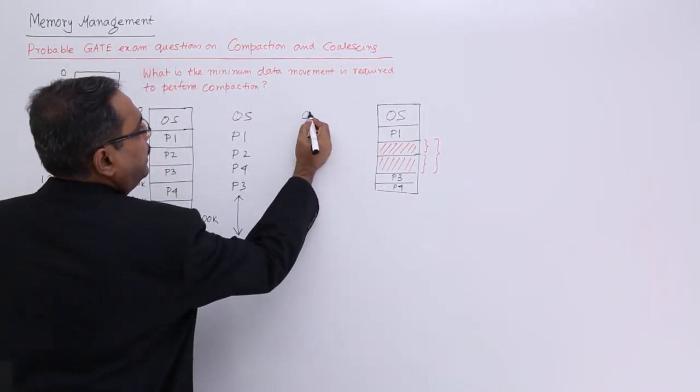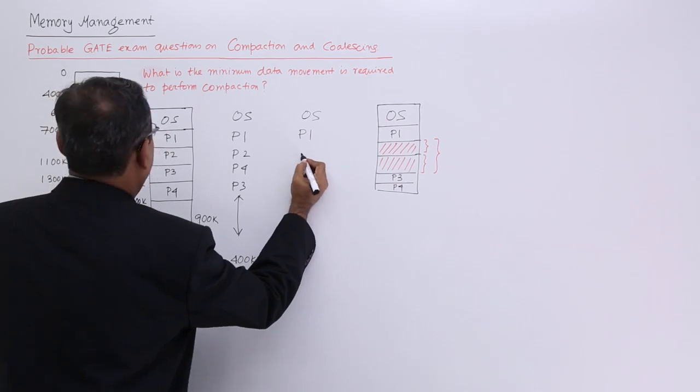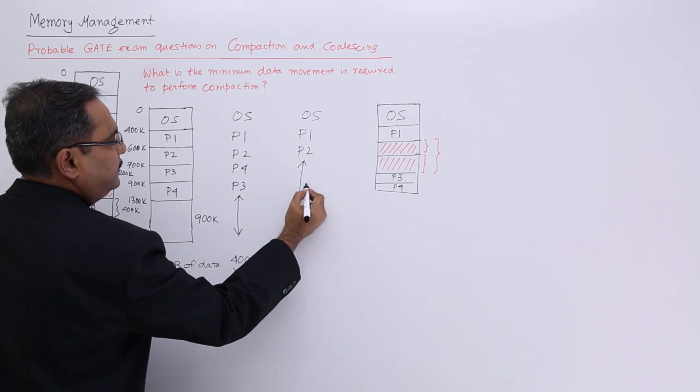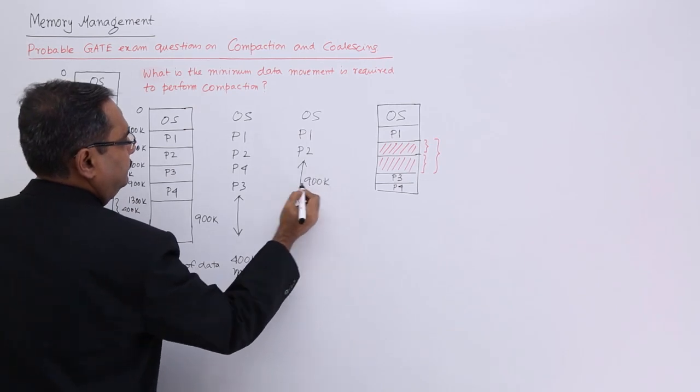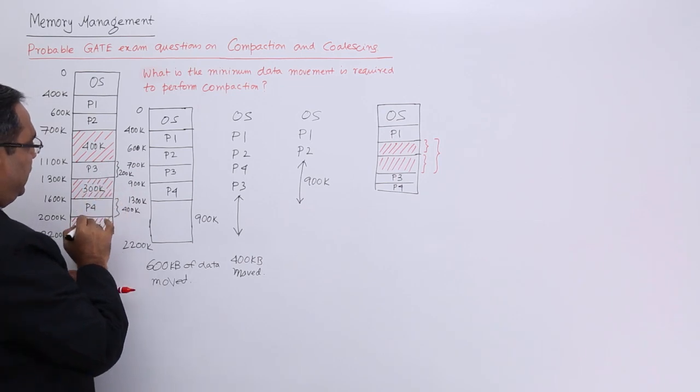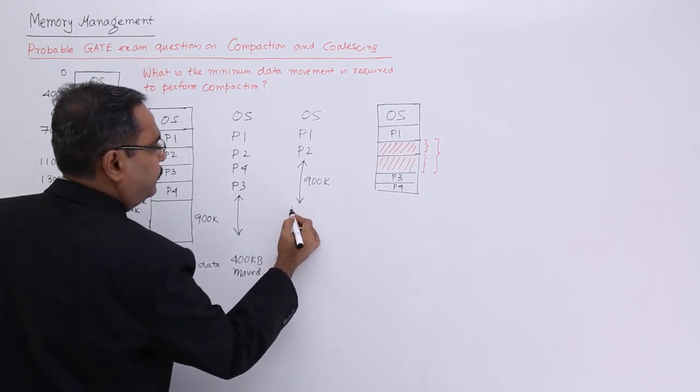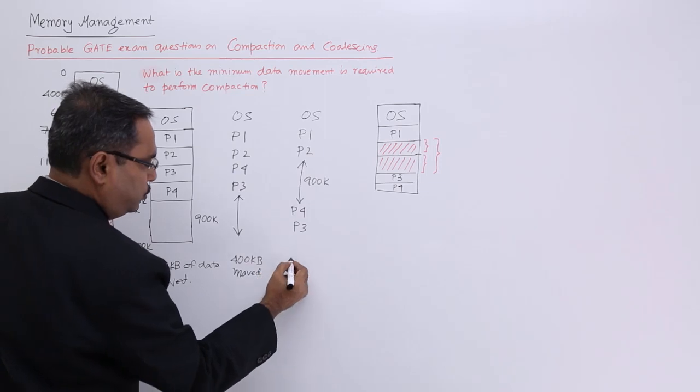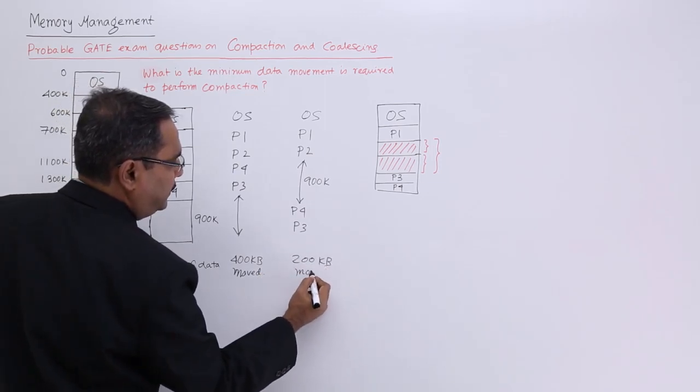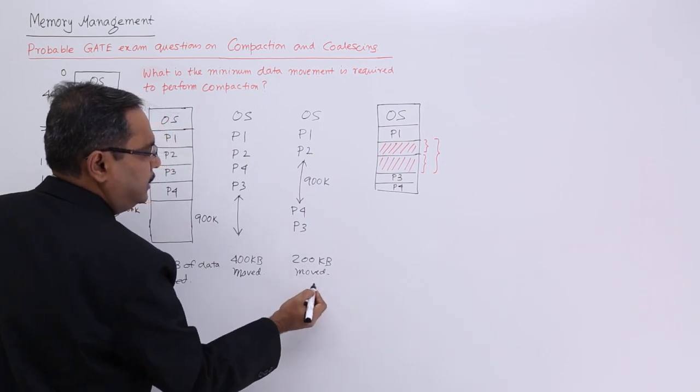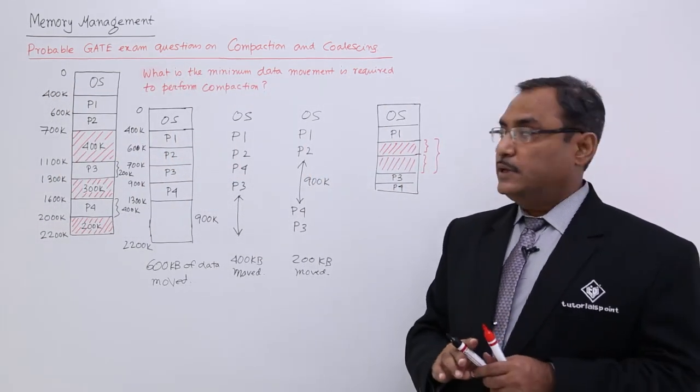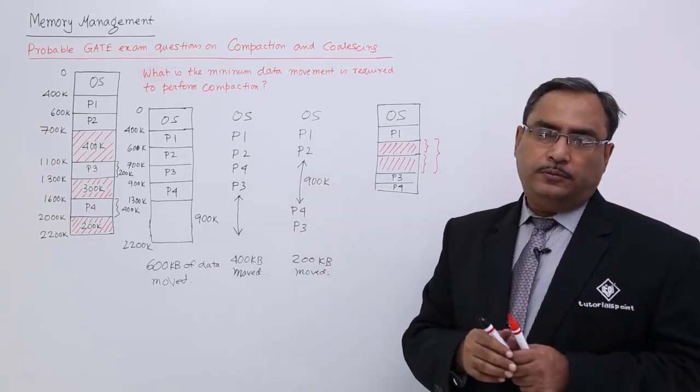So, in that case, what will happen, I am just drawing in a schematic way. So, P1, P2 will be there, then long free space there 900k, and then we will be having our P3 will be coming after this P4. So, P4 will be there and P3 will be there. So, what is the total data movement? In case of gate questions, we will be having options, you should have to tick on that particular option, which is having 200 KB as the answer. So, in this way, the problem can be solved.